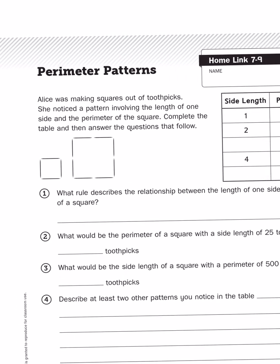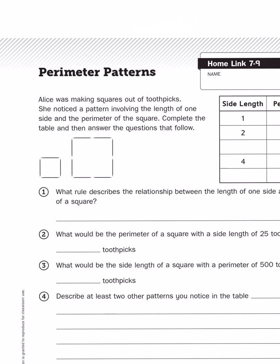It says Alice was making squares out of toothpicks, as one normally does. She noticed a pattern involving the length of one side and the perimeter of the square. Complete the table and then answer the questions that follow.